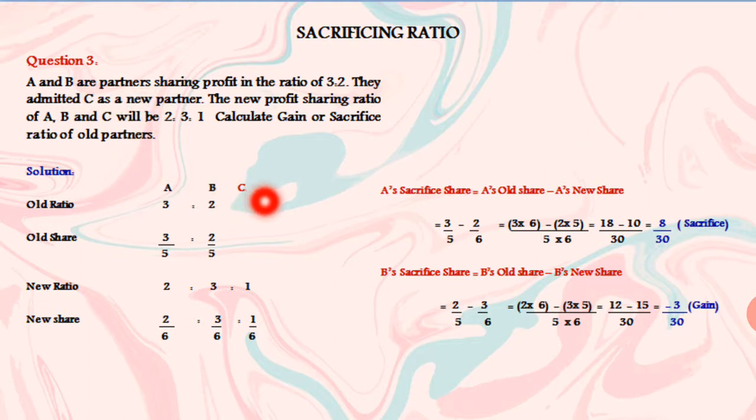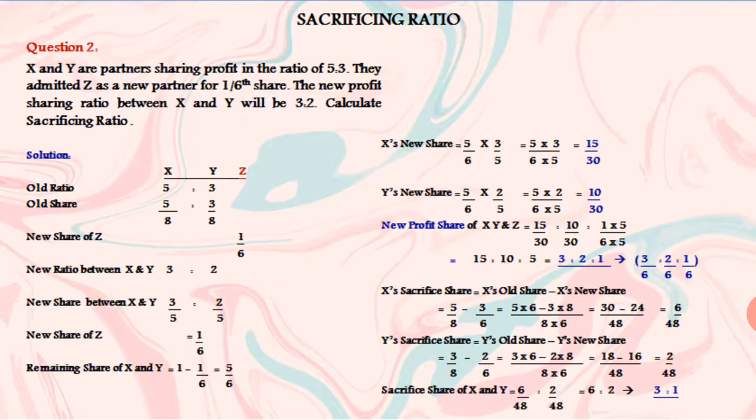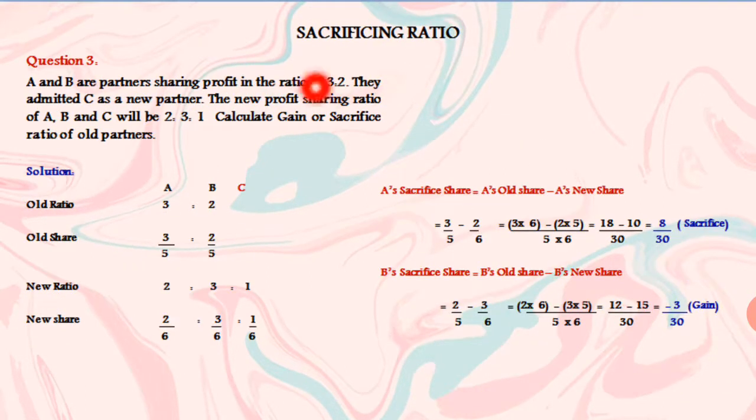A, B, C. Our old ratio is 3 is to 2. 3 divided by 3 plus 2 equals 5. So 3 by 5 for A and 2 by 5 for B.